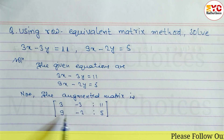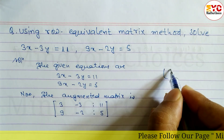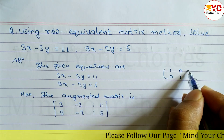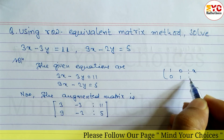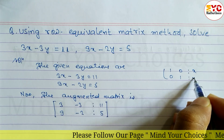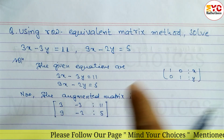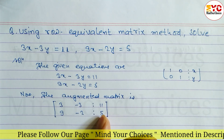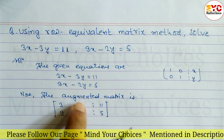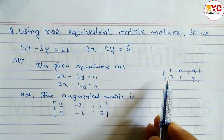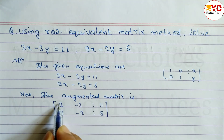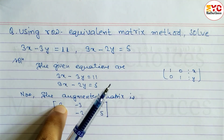Now, this part we have to make into an identity matrix: 1 0 / 0 1. Once we get this identity matrix on the left side, the remaining values on the right will give us the value of x and the value of y.